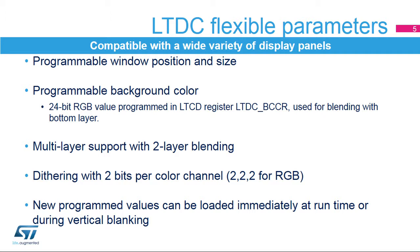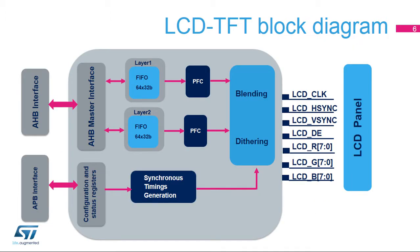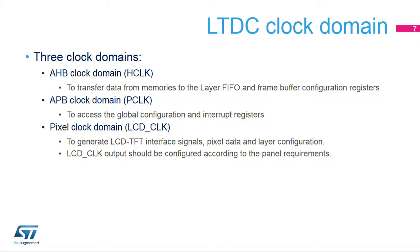New program values can be loaded immediately at runtime or during vertical blanking. This is the LCD TFT controller block diagram. The LTDC features three clock domains: the AHB clock domain or HCLK, to transfer data from memories to the layer FIFO and frame buffer configuration registers; the APB clock domain or PCLK, to access the global configuration and interrupt registers; and the pixel clock domain or LCD_CLK, to generate LCD TFT interface signals, pixel data, and layer configuration. The LCD_CLK output should be configured according to the panel requirements.